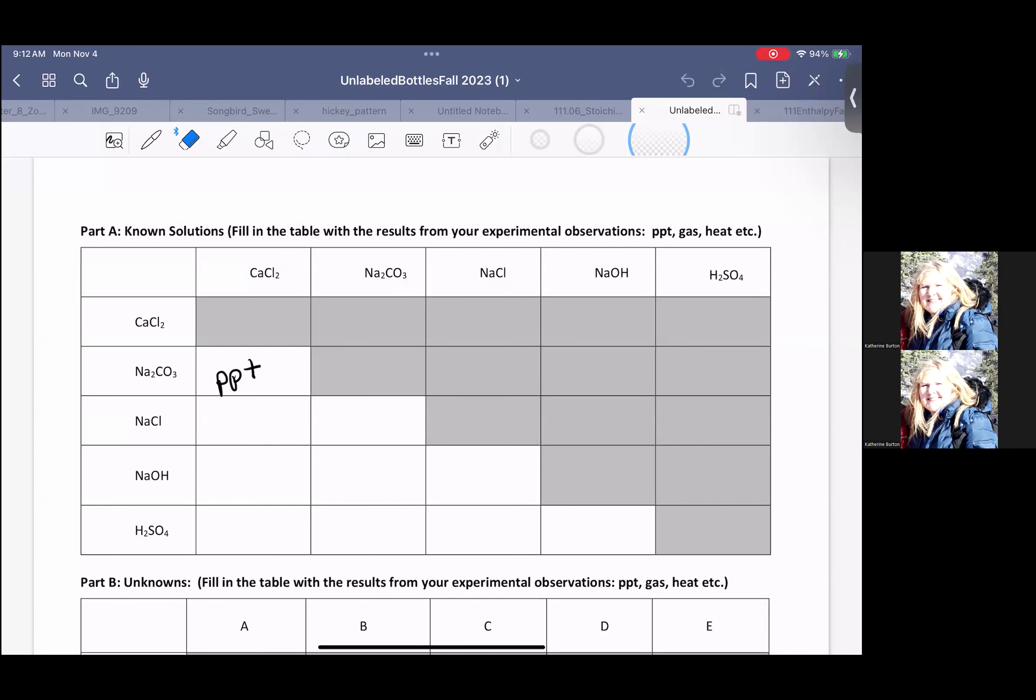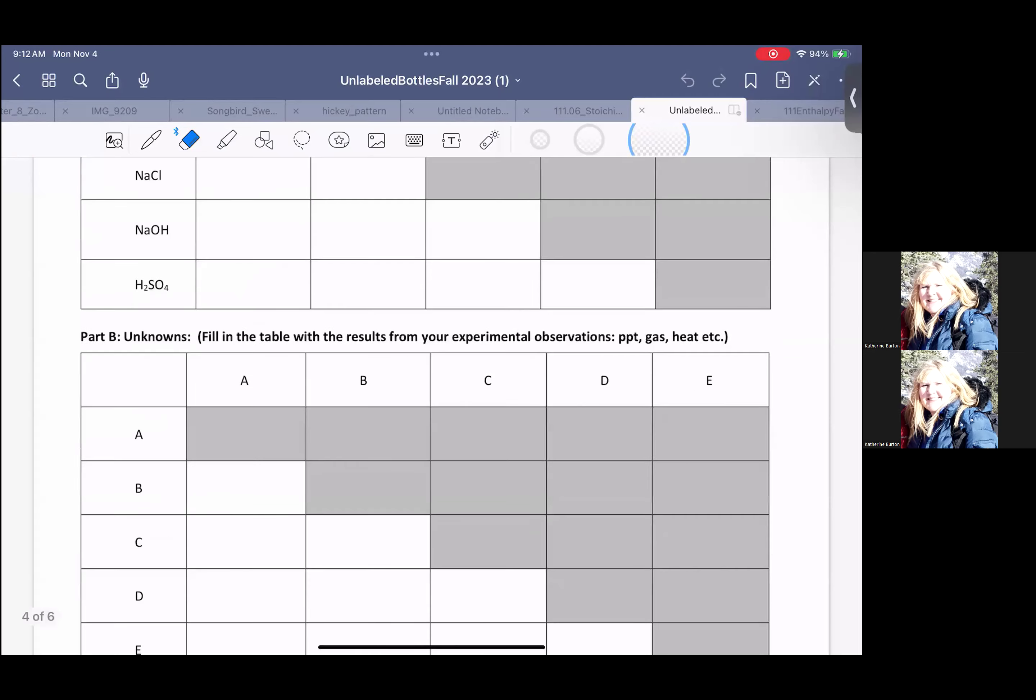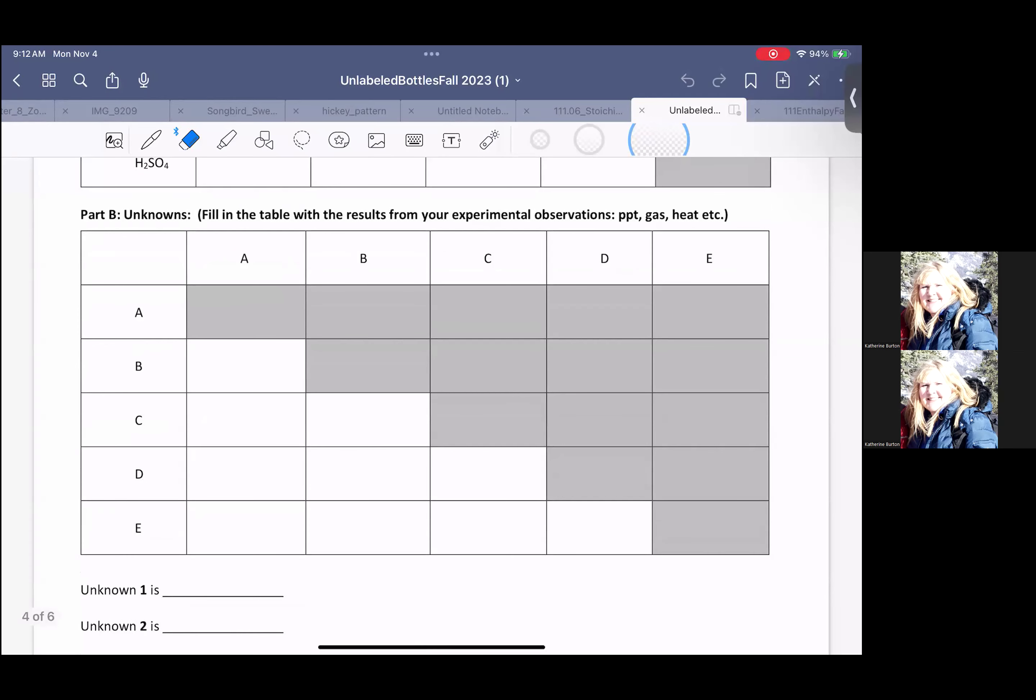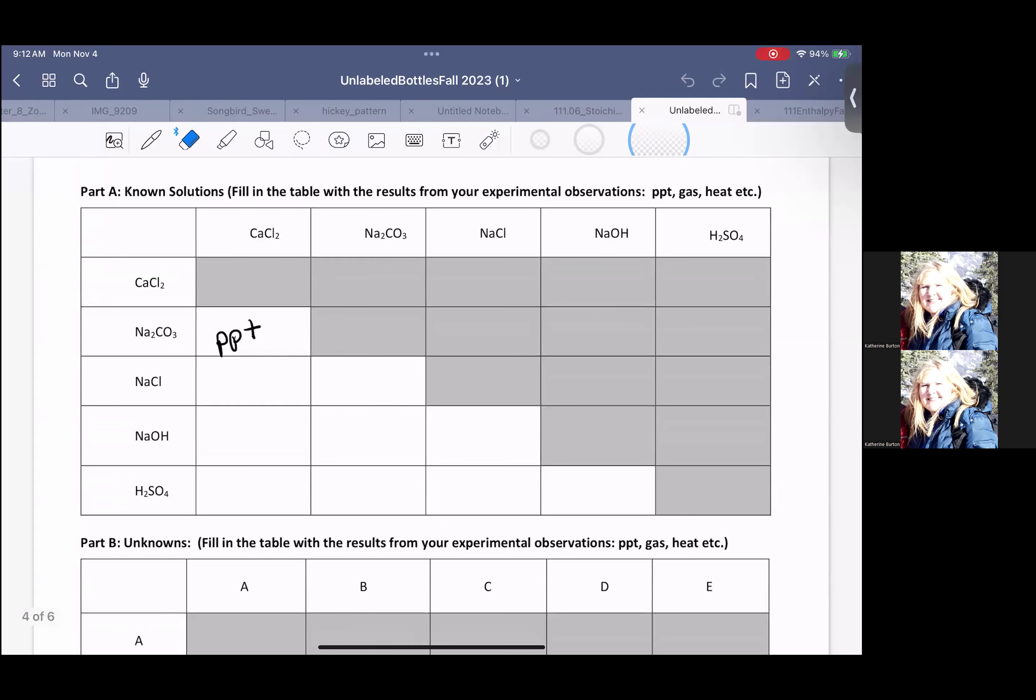Let's take a quick look at the unlabeled bottles lab. What we need to do is make sure that we have collected our data correctly, that we are looking at both our knowns and our unknowns, that you are using the results from the reactions of the knowns.